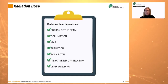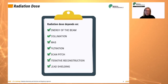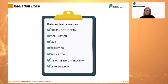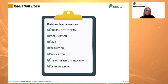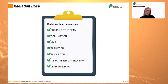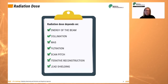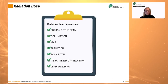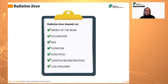As with radiography, the energy of the beam controls penetrability and scatter production. In CT, the kVp is usually kept in the range of 120 to 130. Two sets of collimators are generally used: one positioned in front of the primary beam, or pre-patient, and the other positioned in front of the detector array, or post-patient.